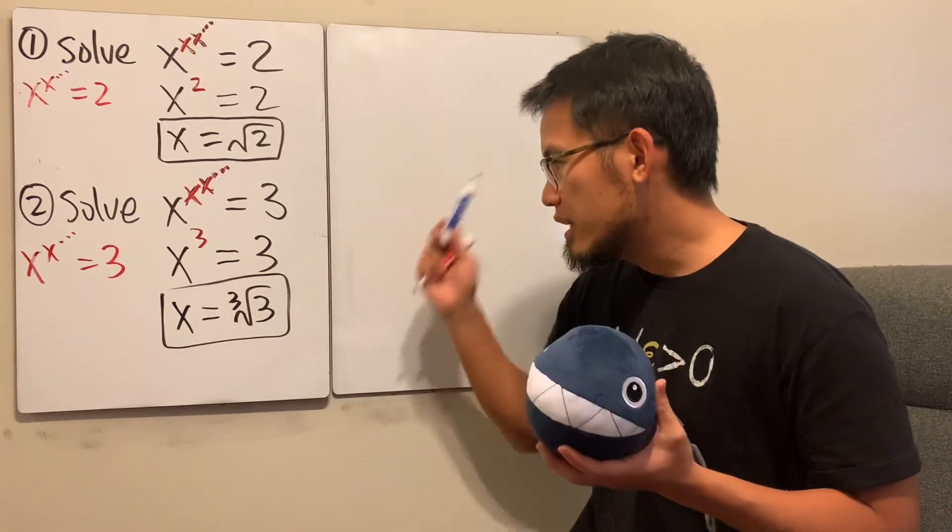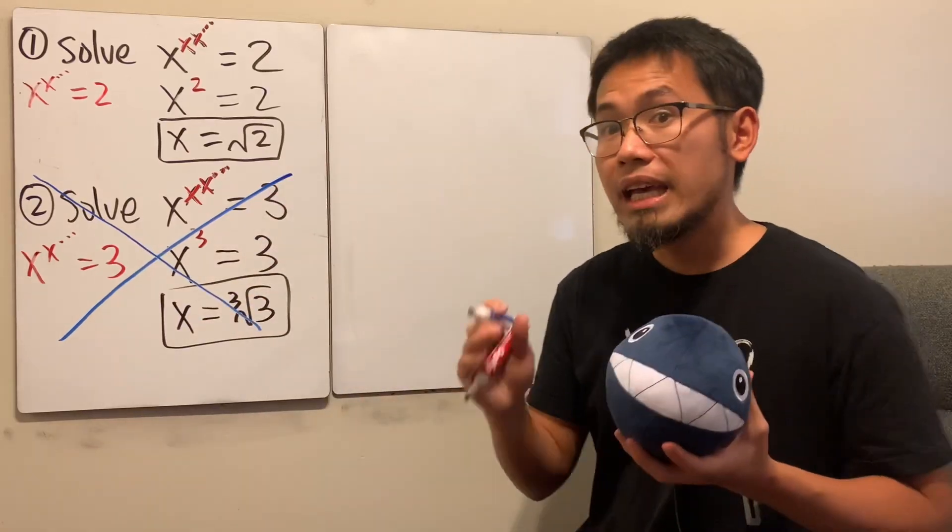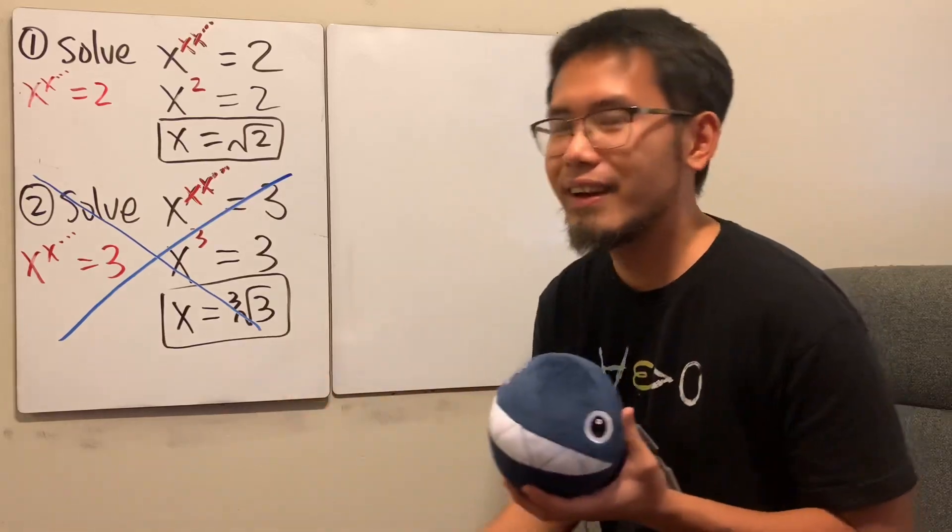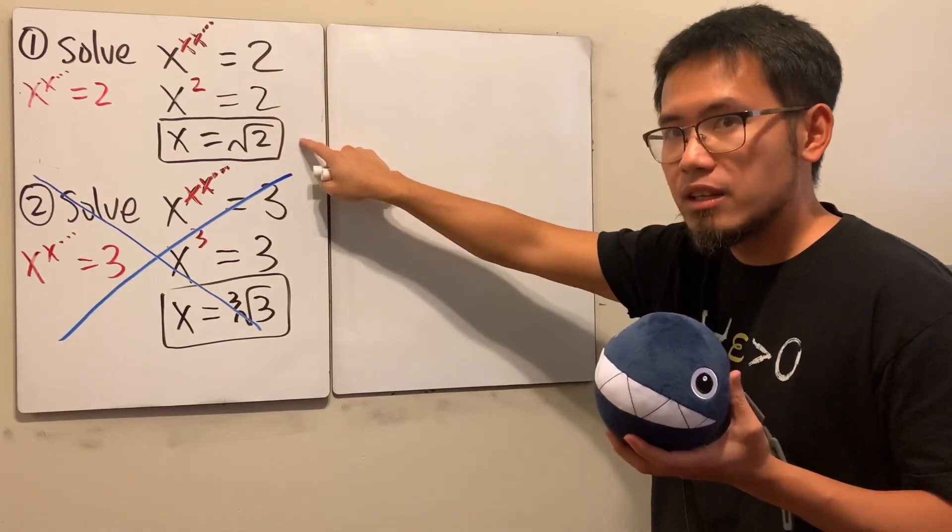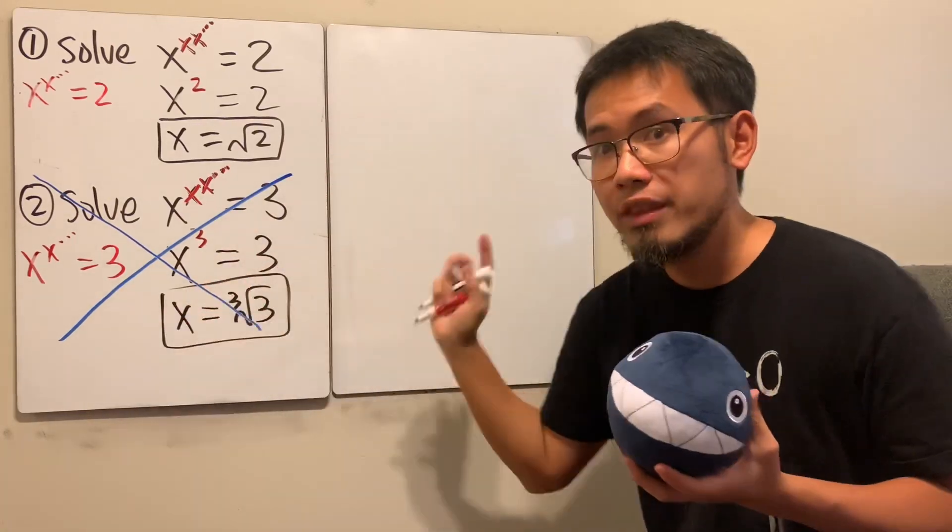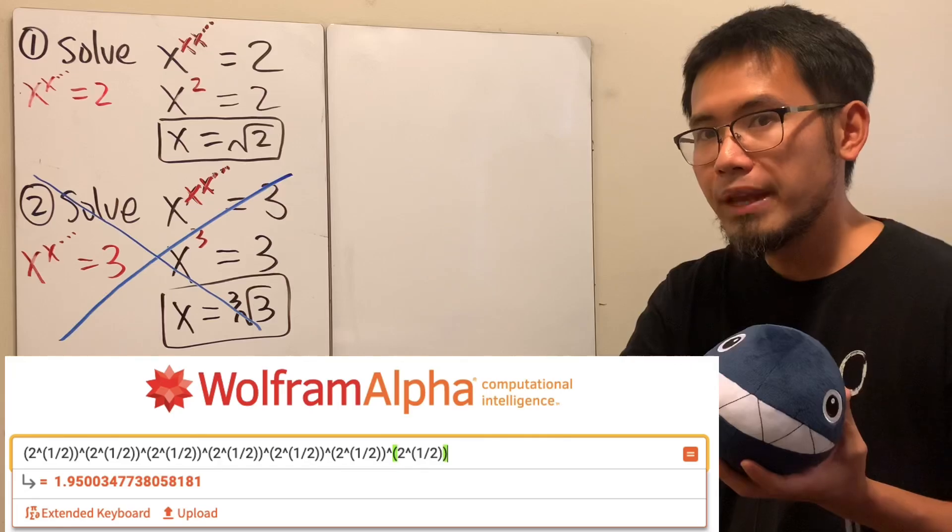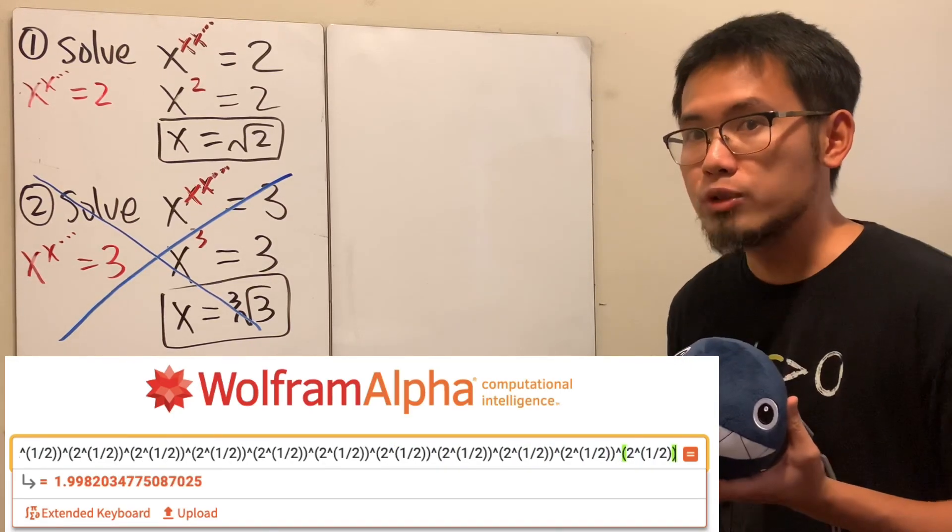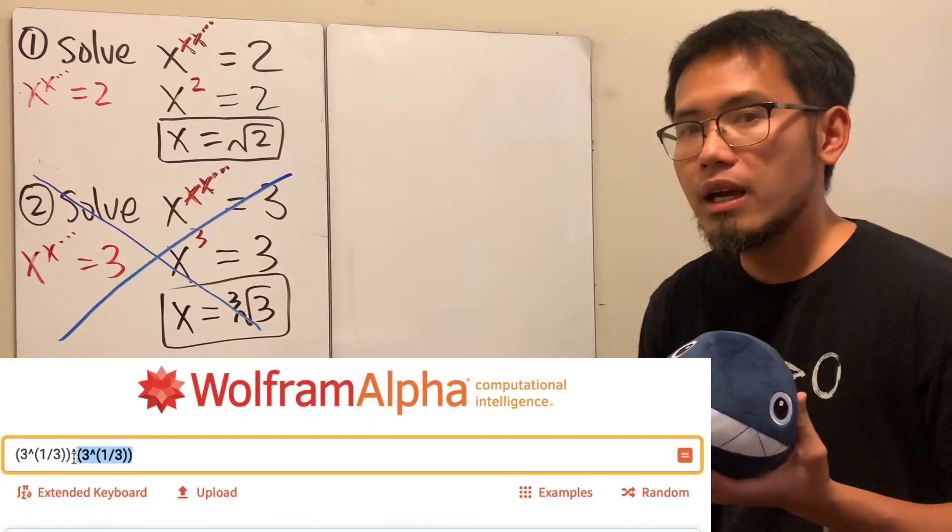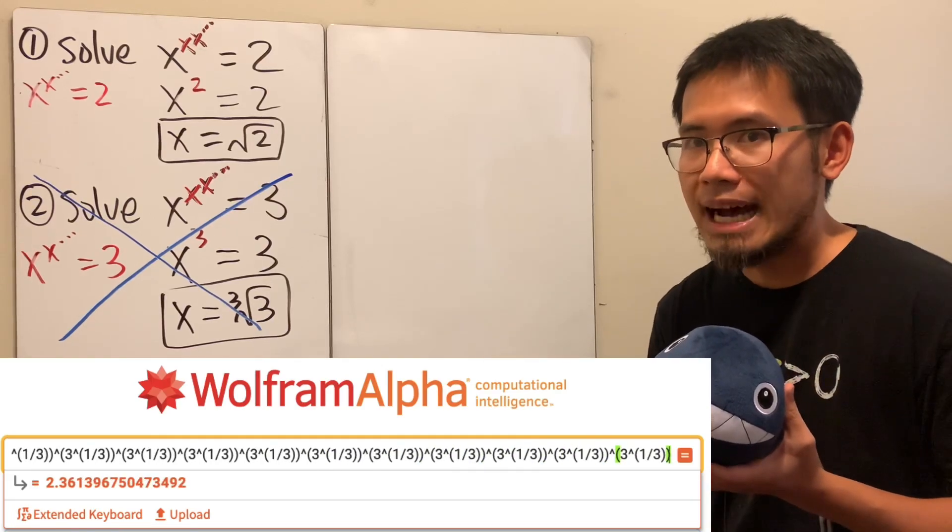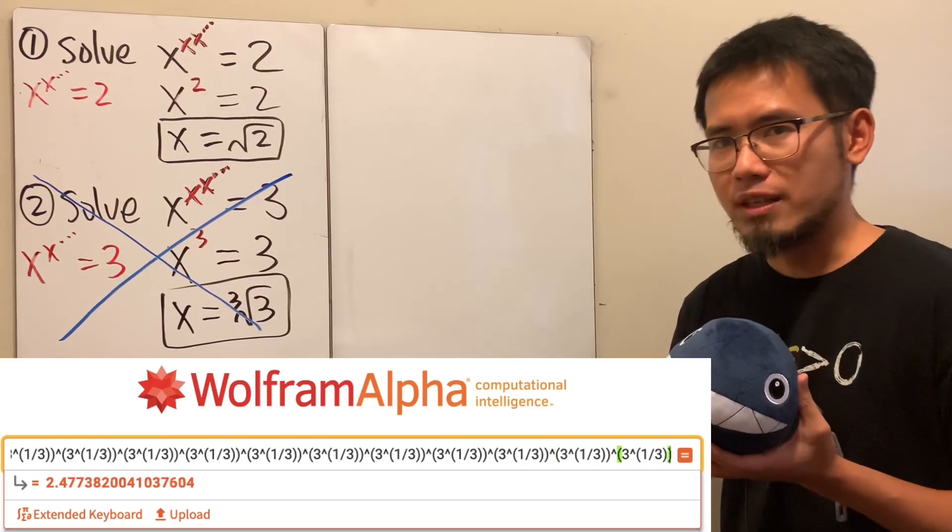But unfortunately, this is not the case. The theory is that if you do it like this, this is actually not the answer. In fact, we have a lot of things to say about this equation. Let me convince you by looking at the screen. If you start with square root of 2 and build out the powers, the result is approaching 2. However, if you start with cube root of 3 and build out the power, the result unfortunately does not approach 3, but it does converge to about 2.4 something.